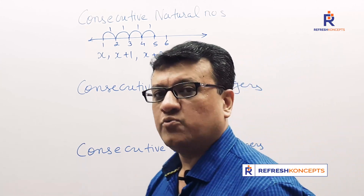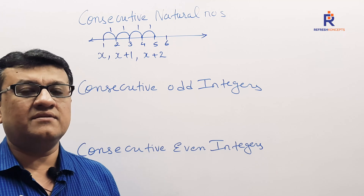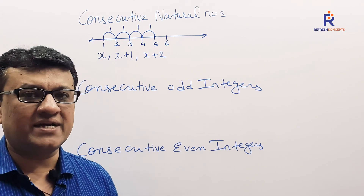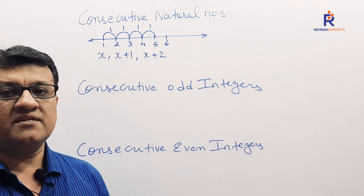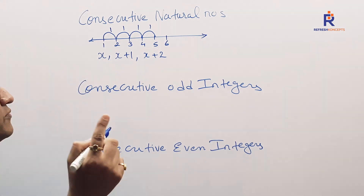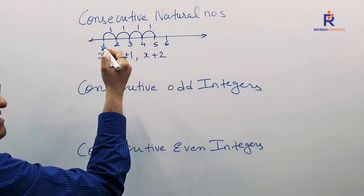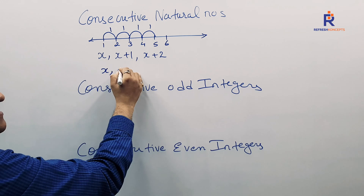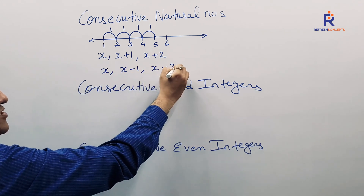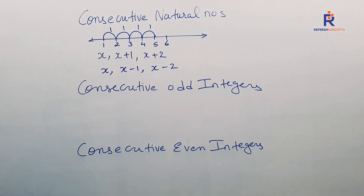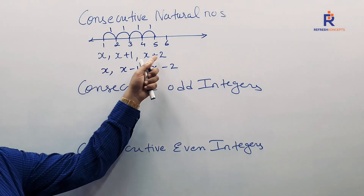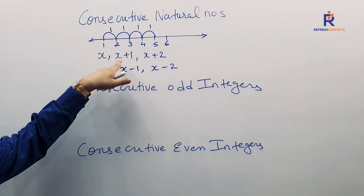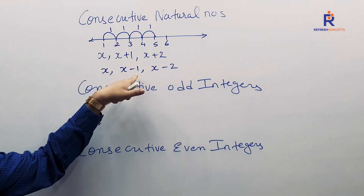Many minds are now thinking: can't we write X, X minus 1, X minus 2 as three consecutive natural numbers? You are also correct — that is the other way. We can say the three consecutive natural numbers are X, X minus 1, X minus 2. It is not necessary to always write X, X plus 1, X plus 2.